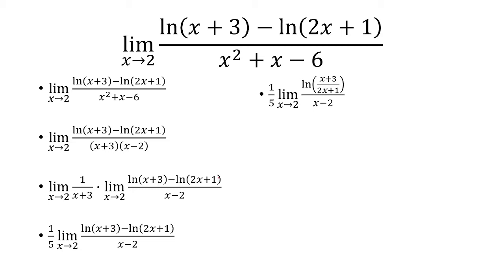The second thing we're going to do now is use the property of logs. So whenever you have ln of A minus ln of B, that's just ln of A over B. So in this case, we get ln of x plus 3 over 2x plus 1.